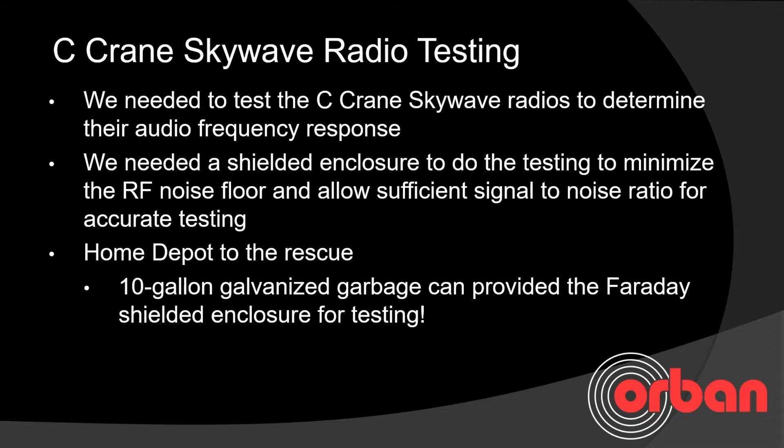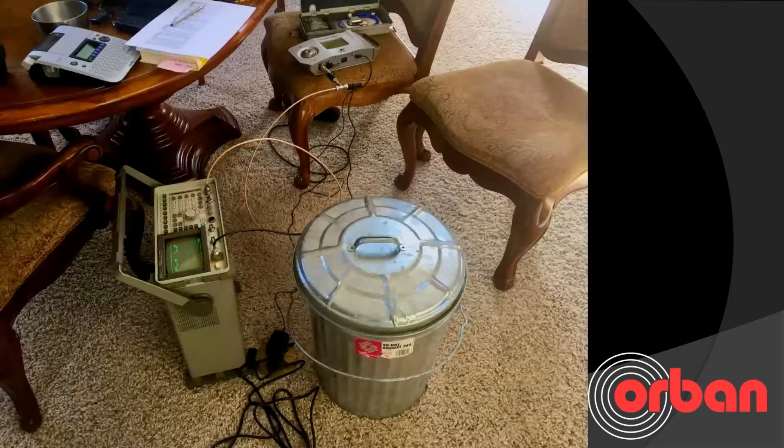We needed to quantify the frequency response of those radios, and in order to do that we needed a shielded enclosure to scrape off as much RF noise as possible. We went over to our local Home Depot and bought a 10-gallon galvanized garbage can as our Faraday shielded enclosure. A Hewlett Packard HP 8920A provided the AM signal with a tone on it so that we could test the frequency response.